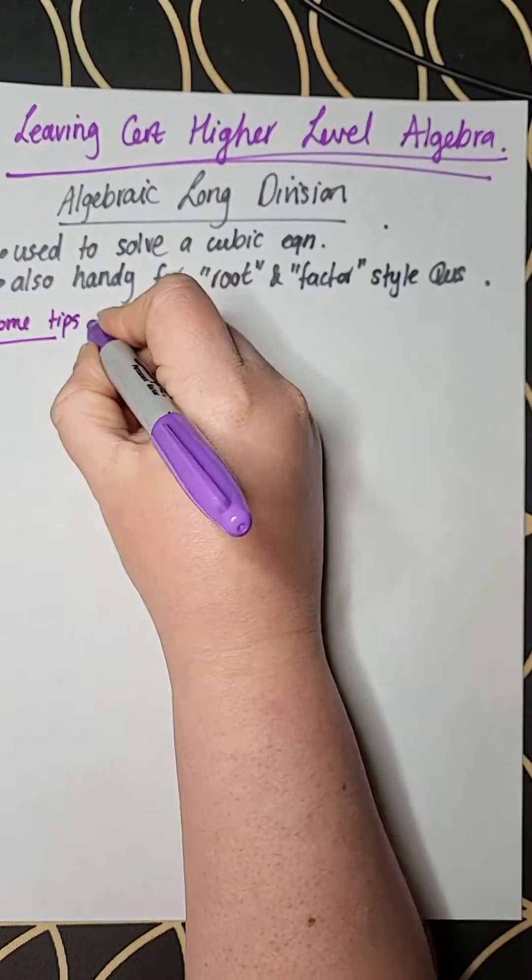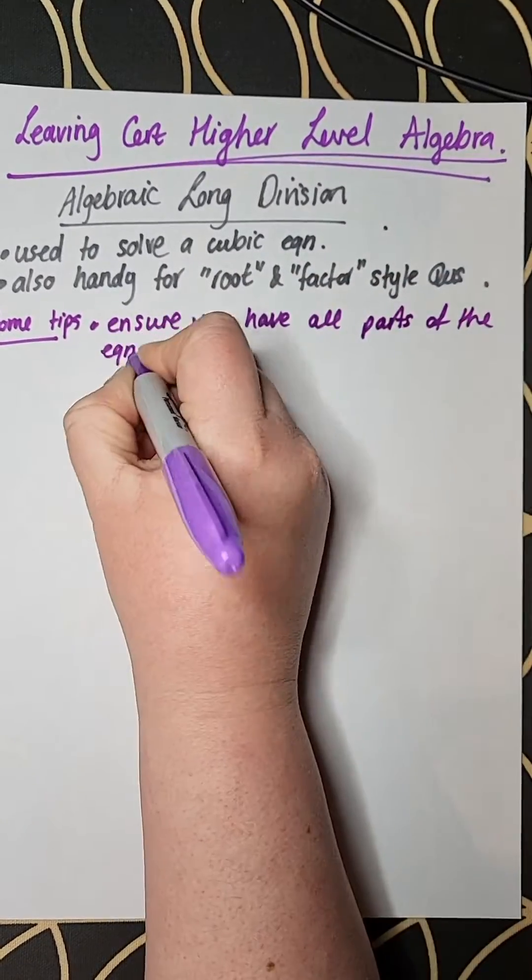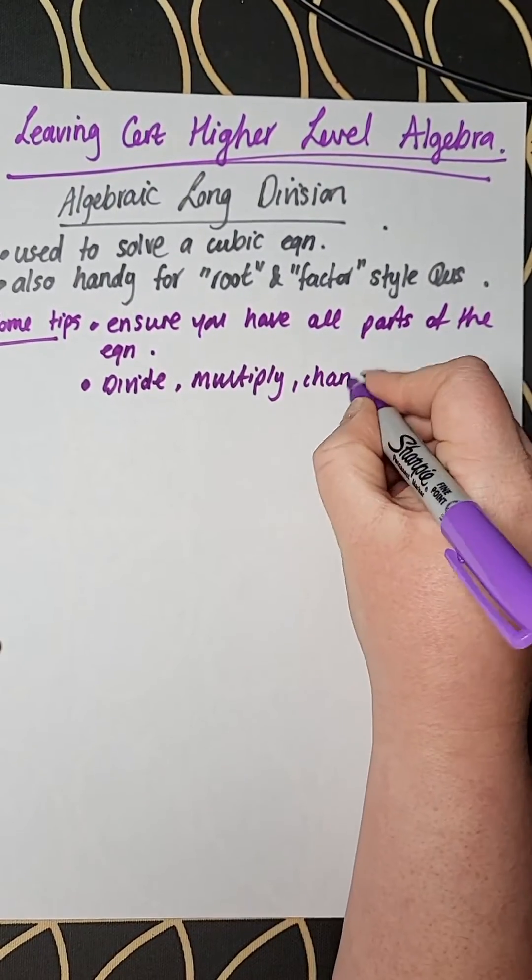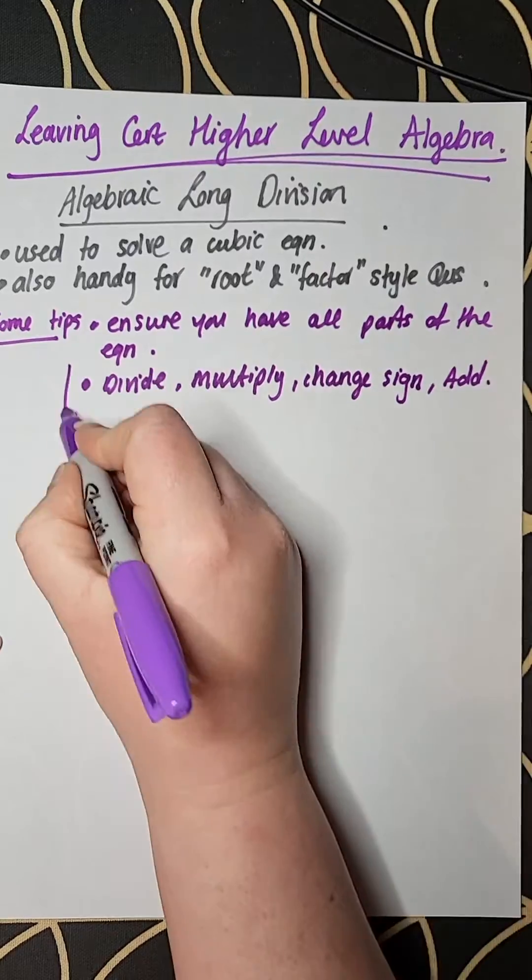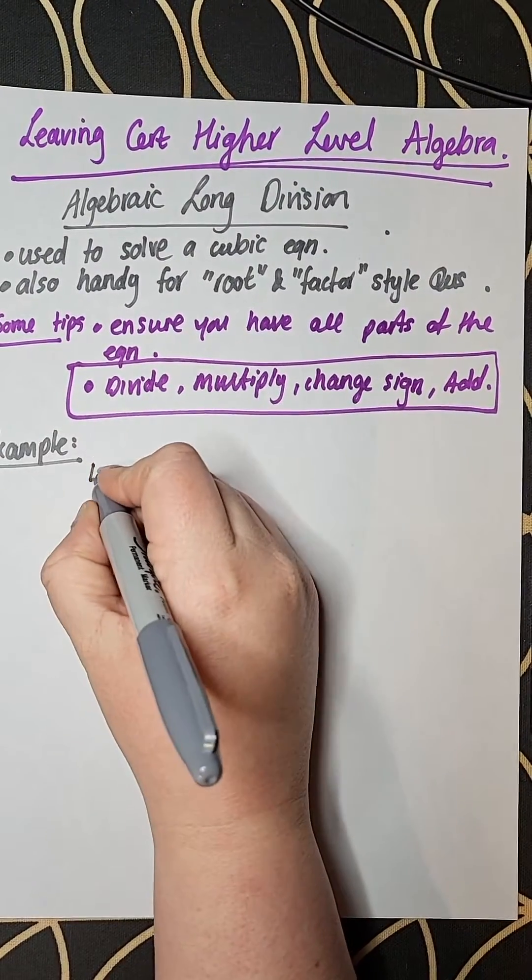So just a few tips for you on this before we even start. Make sure that you have all the parts of the equation. So we'll see an example later on where not every type of x is in the actual equation you're presented with. So make sure that you include those. We'll talk about that later.